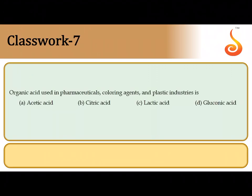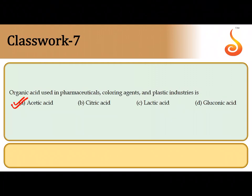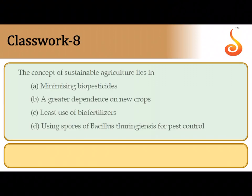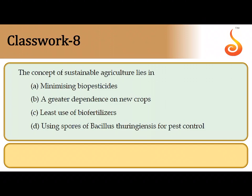The seventh question says the organic acid used in pharmaceuticals, coloring agents, and plastic industries is acetic acid. Acetobacter acetyl is the source of acetic acid that is extracted on an industrial scale.